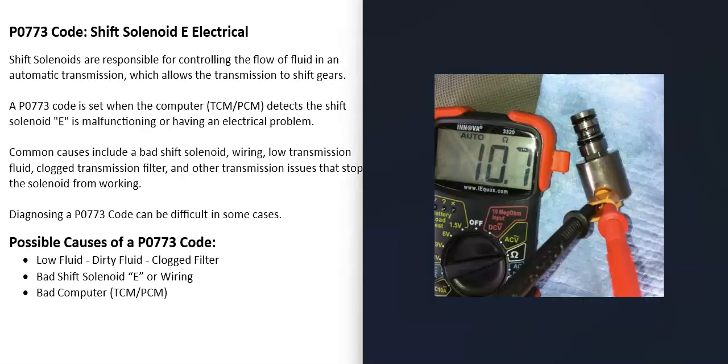If you have a multimeter, you can test that solenoid. Look up what the rated ohms are for that specific solenoid, since there are differences between these solenoids. Then set your meter to ohms and see if it matches. If it doesn't match, if it goes higher or lower, then you know it's bad and needs to be replaced.